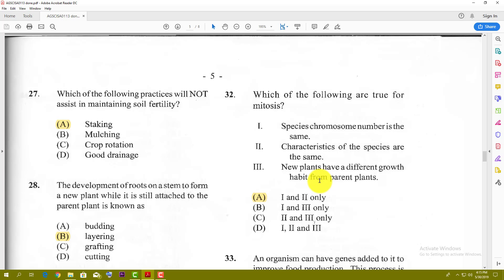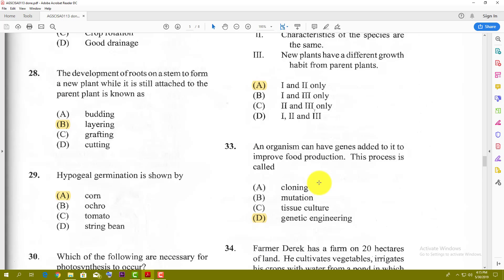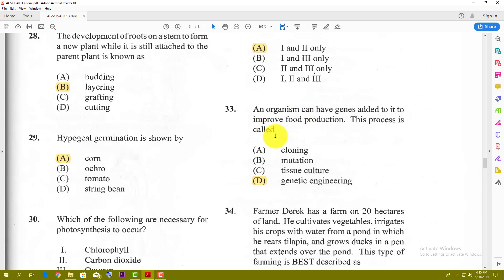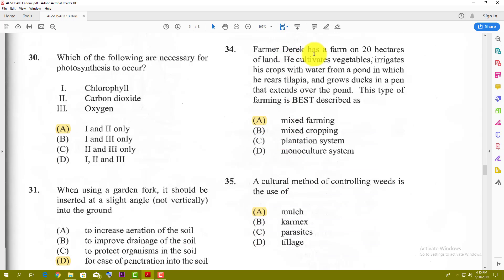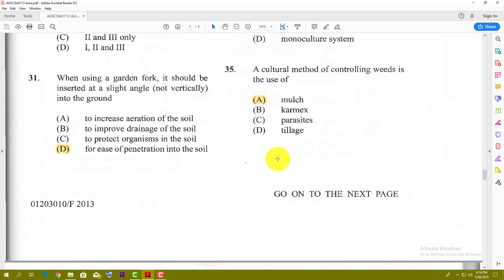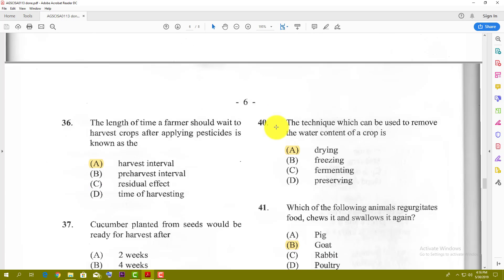Number thirty-three: an organism can have genes added to it to improve food production. This process is called genetic engineering. Number thirty-four: Farmer Derek has a farm of 20 hectares. He cultivates vegetables, irrigates his crops with water from a pond in which he rears tilapia, and grows ducks in a pen that extends over the pond. This type of farming is best described as mixed farming because you have livestock and crops. Number thirty-five: a cultural method for controlling weeds is the use of mulch. You can use mulch to keep down the weeds.